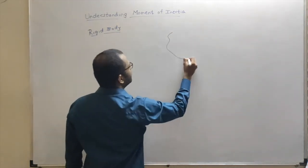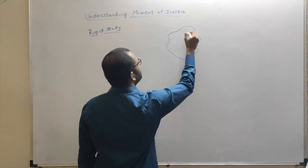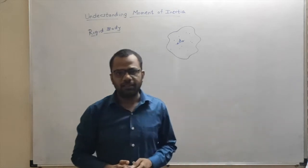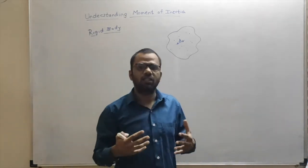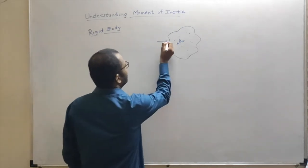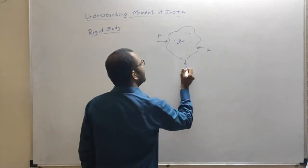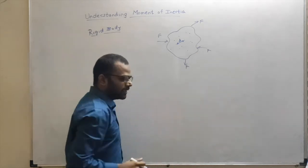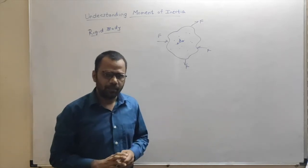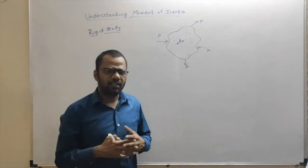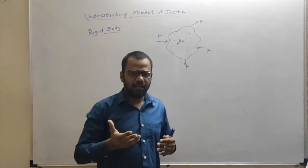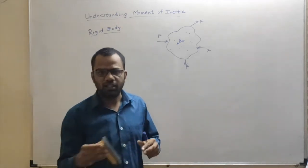Suppose I have some arbitrary body and this body is made up of a large number of particles. The distance between any two particles — suppose this is the distance between two particles — now a body will be called rigid if under the application of any amount of forces, the distance between the two particles does not change. Actually, in nature there is no body that is truly rigid because under large forces every body can get deformed.